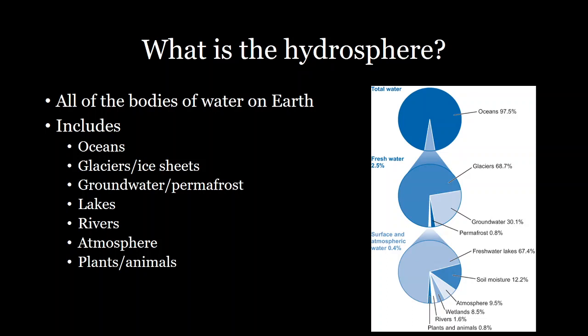Water is distributed all over the planet, the vast majority of which — 97% — is located in the oceans. The remaining fresh water makes up 2.5% of all water on earth, and most of it is frozen. Glaciers make up over 68% of the fresh water on earth, and only 0.4% of all fresh water is surface or atmospheric water, so there's very little water available as drinking water.